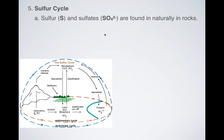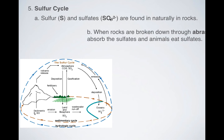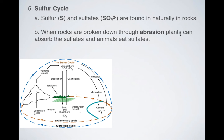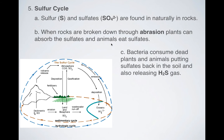Last one, the sulfur cycle. Sulfur and sulfates are found naturally in rocks. Again, sulfates have this symbol, SO4 2 minus, but just focus on we have one sulfur. We have four oxygens. When rocks are broken down through abrasion, plants can absorb those sulfates and animals can eat them also, just like in the phosphorus cycle. Except now we're looking at sulfates.